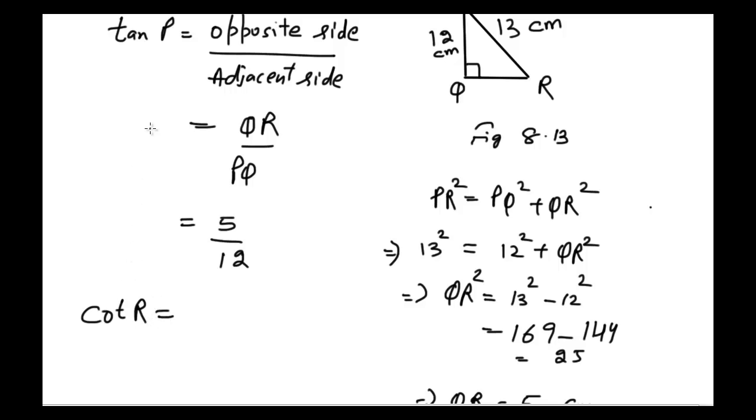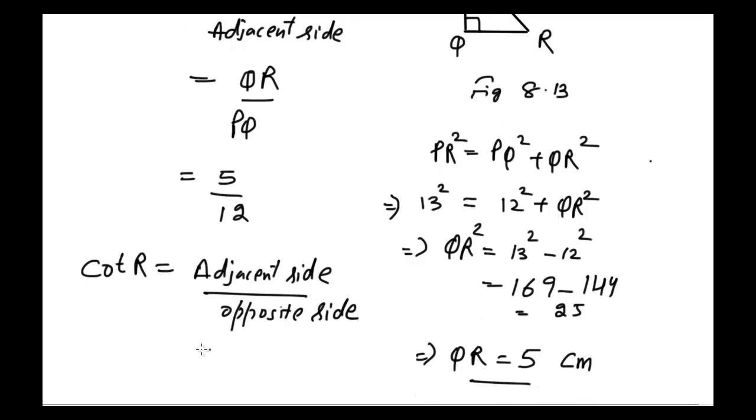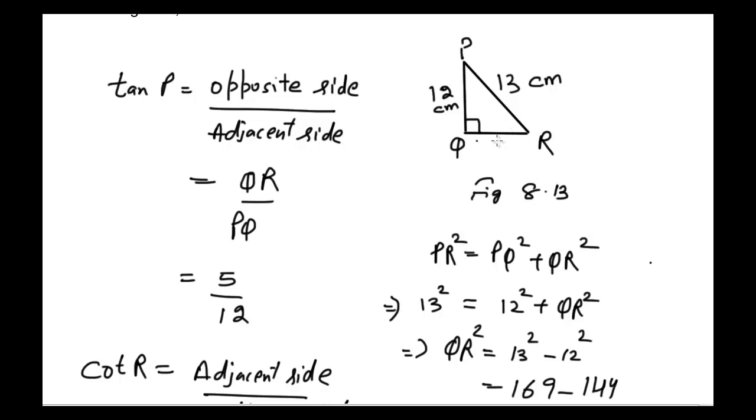Now cotangent is just the reciprocal of tangent, so the formula for cotangent would be adjacent side divided by opposite side. And it would be equal to: adjacent side to angle R is QR.